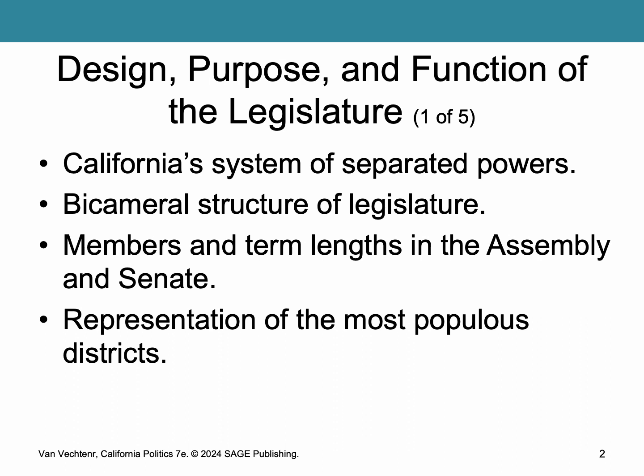California has a bicameral legislature, just like the federal Congress. We have two houses: the Senate and the Assembly. The lower house, the Assembly, has 80 members that serve two-year terms. The upper house, the Senate, has 40 members that serve four-year terms. Assembly districts have almost half a million constituents each, and Senate districts have almost 1 million — larger than 52 U.S. House districts across the country. A constituent is a person who resides in a district represented by an elected official.